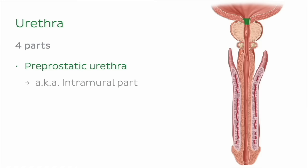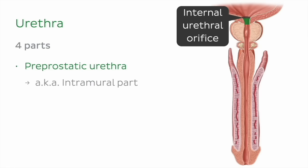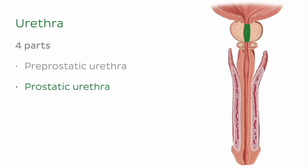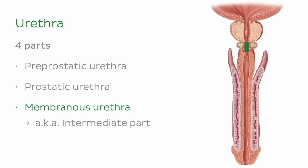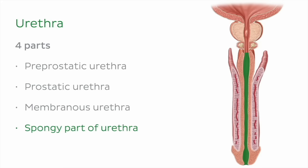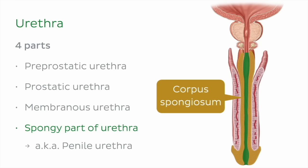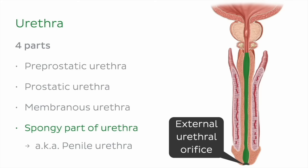Next, we have the prostatic urethra, which is the portion of the urethra that passes through the prostate gland. Continuing on, there's the membranous urethra, or intermediate part, which connects the prostatic urethra to the spongy urethra. And finally, the spongy part, also known as the penile urethra. This is the part of the urethra contained in the corpus spongiosum erectile tissue of the penis that opens to the outside through the external urethral orifice.